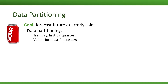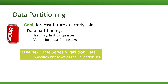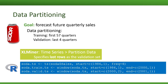Let's return to the example of the quarterly soft drink sales that we saw earlier. We're going to start by partitioning our series, and suppose that our goal is to generate forecasts for the next four quarters. So our validation period is going to be four months in this example. In XLMiner, we use the data partitioning option in the time series functions, and specify the last four rows as the validation set. Or if you're using R, here is simple code to achieve the partitioning — the first line defines the time series object soda.ts, and the next two lines define the training and validation periods.